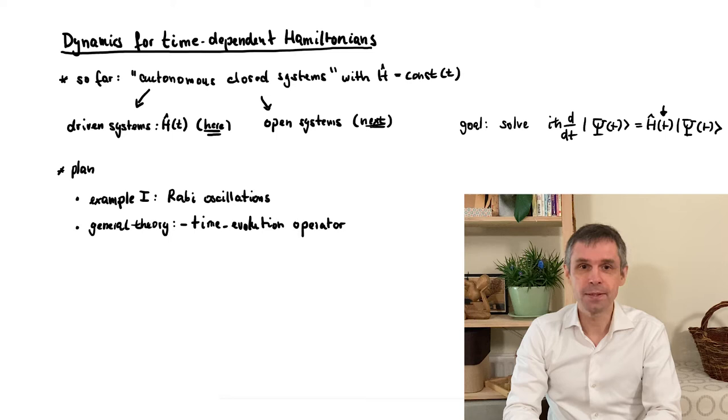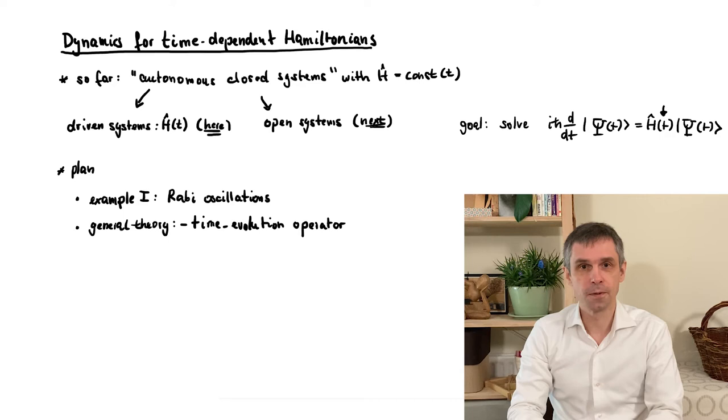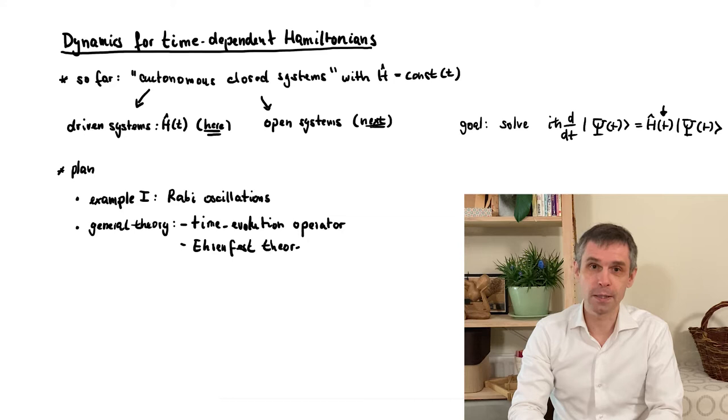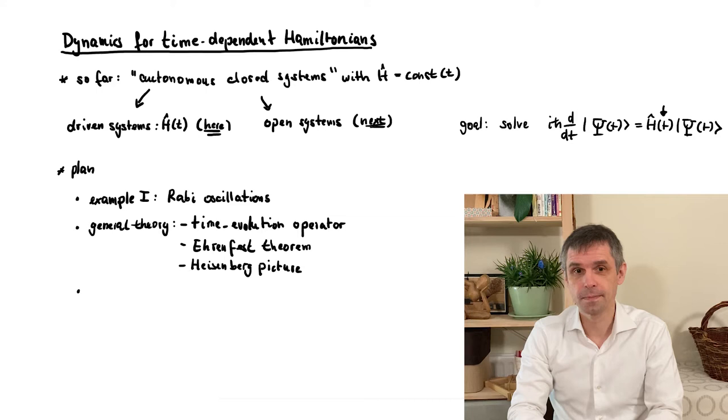And these general features are indeed all that we need to set up two frameworks that target the dynamics in a much more direct way. The first framework is based on the Ehrenfest theorem, which sets up equations of motion for expectation values. The second is the Heisenberg picture, which turns the operators of the observables themselves into time-dependent objects.